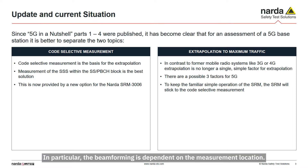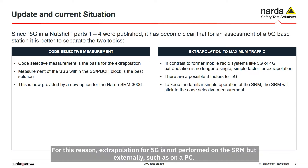Whereas for 3G and 4G LTE there was just one simple factor that was usually the same for all measurement situations with the same bandwidth, there can be three different factors for 5G New Radio with beamforming and TDD. In particular, the beamforming is dependent on the measurement location. For this reason, extrapolation for 5G is not performed on the SRM, but externally, such as on a PC.